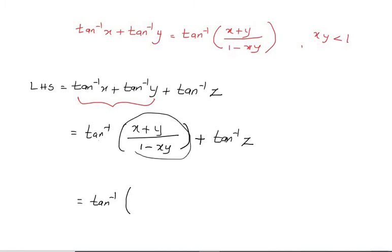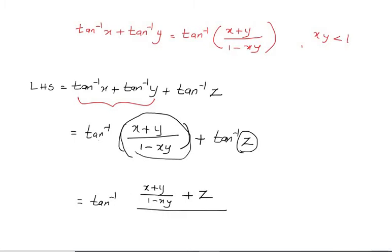This is in terms of x and y. So x plus y is equal to x plus y by 1 minus xy. Then plus z. The denominator: 1 minus xy. xy is equal to x plus y by 1 minus xy. This is all x into z.